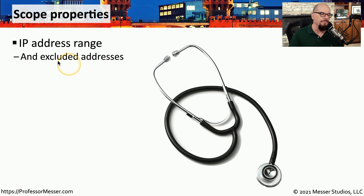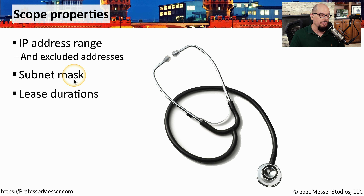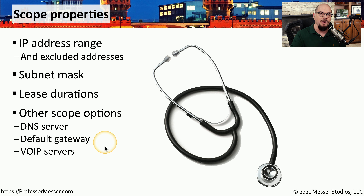The scope contains a number of different parameters. Perhaps the most important will be the IP address range used by this particular section of the DHCP server, along with any addresses that you would not want to be assigned to individual workstations. You'll also want to add the subnet mask for this network, the duration of the lease, and any other options that are important — for example, DHCP servers, default gateway information, the details on an IP address for your voice over IP gateways, or any other devices specific to the IP configuration of your clients.